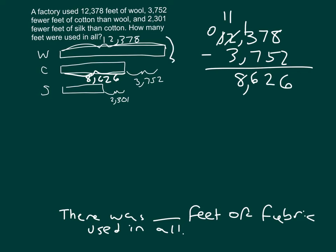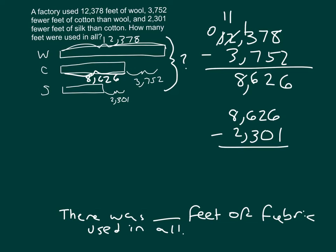There is one more adjustment to make on the bar diagram. We want the total number of wool, cotton, and silk. We have 8,626 for cotton. For silk, the missing silk portion plus 2,301 equals 8,626. So to figure out the amount of silk, we take 8,626 and subtract 2,301, because the amount of silk is 2,301 fewer than cotton.